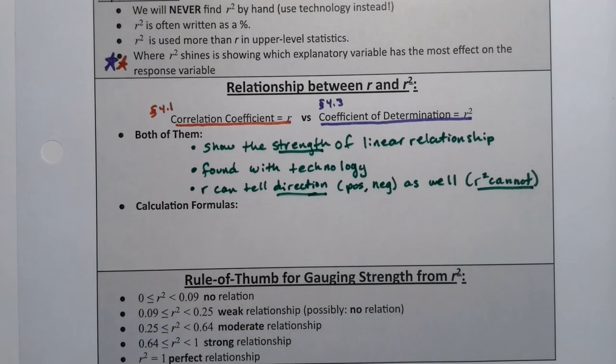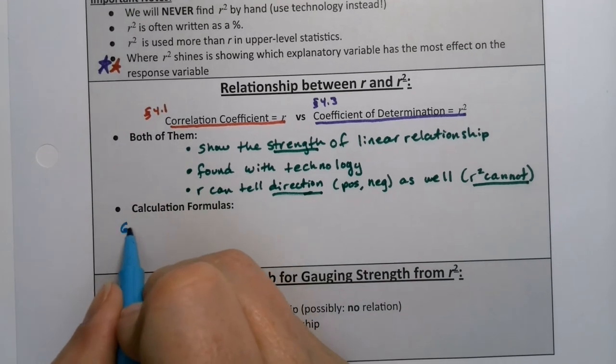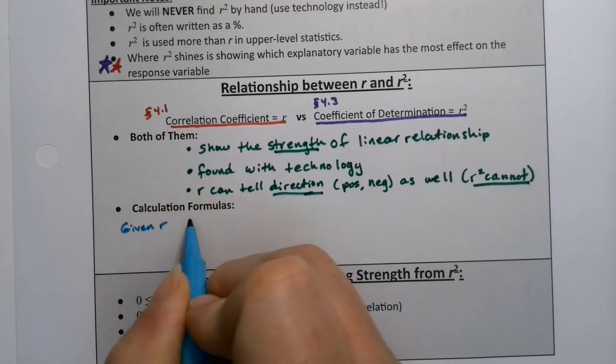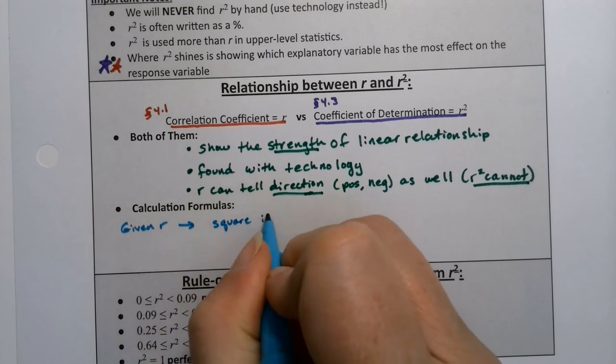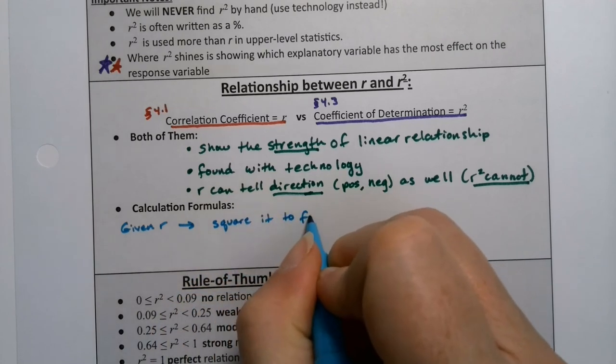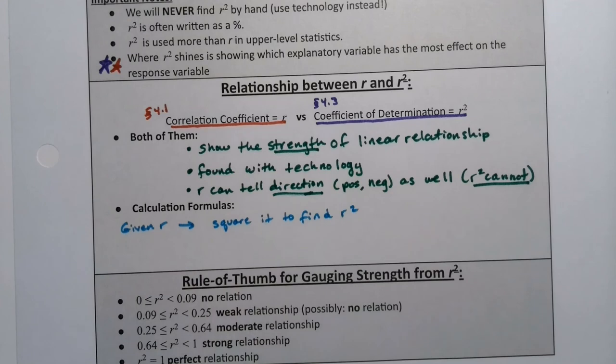So, indeed, if you were given r, then you would square it to find r squared. Simple as that.